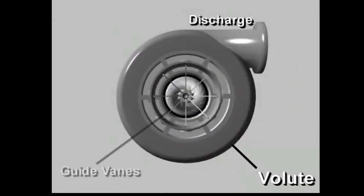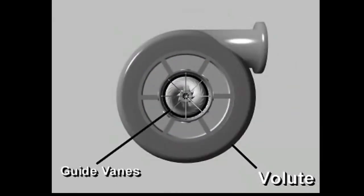Inlet guide vanes control a centrifugal compressor's capacity. These movable vanes are located in the suction opening. With vanes turned fully open, the compressor produces its full cooling capacity. As the vanes are closed, they reduce refrigerant flow through the compressor, reducing the capacity of the refrigeration cycle.